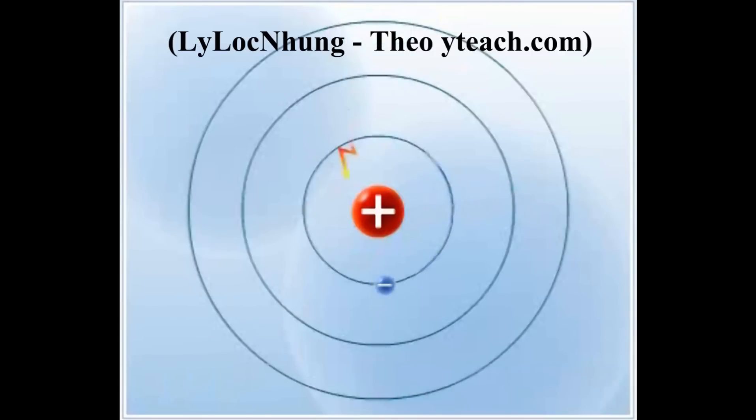When the atom absorbs energy, electrons can move from the orbits of lowest energy to orbits of higher energy, to give the atom an excited state.